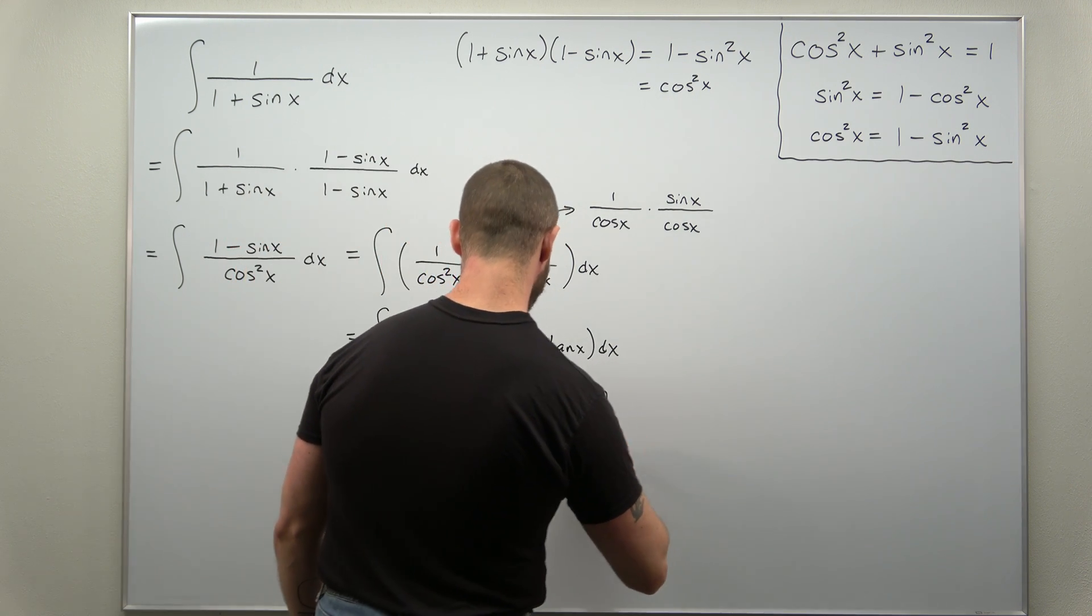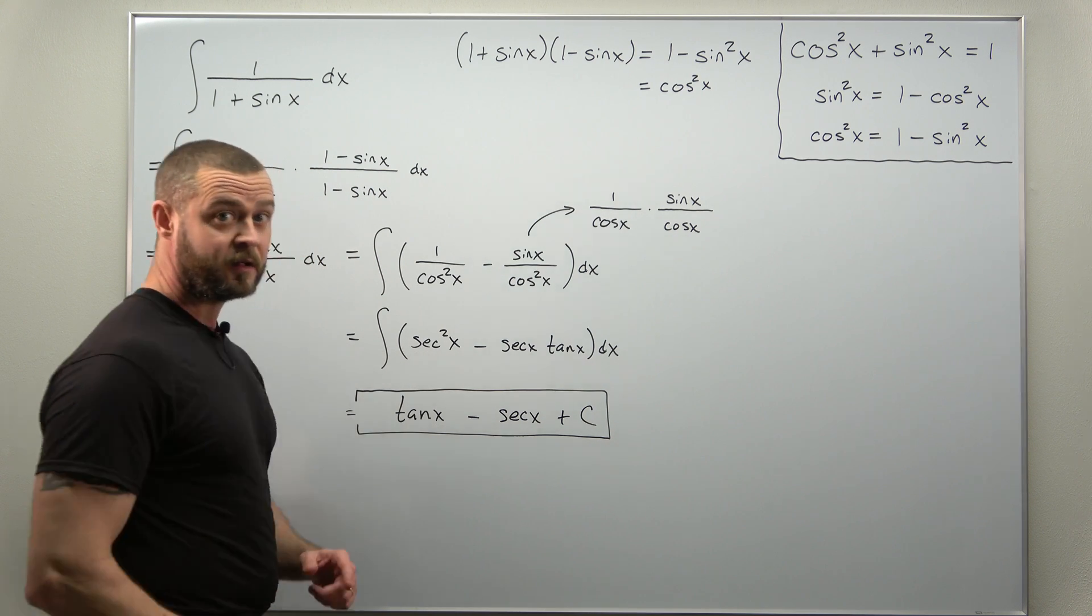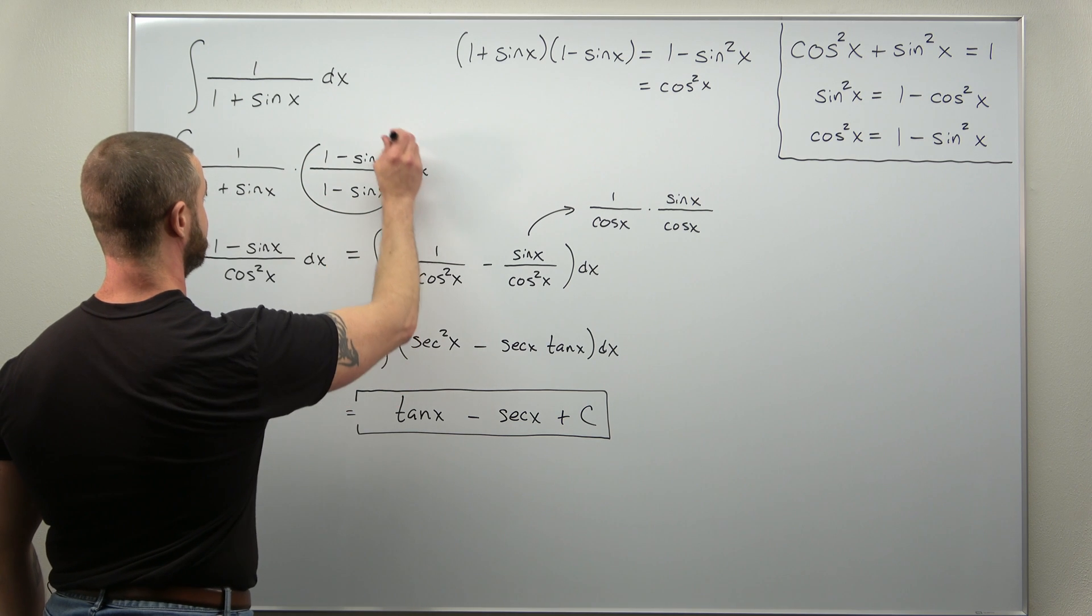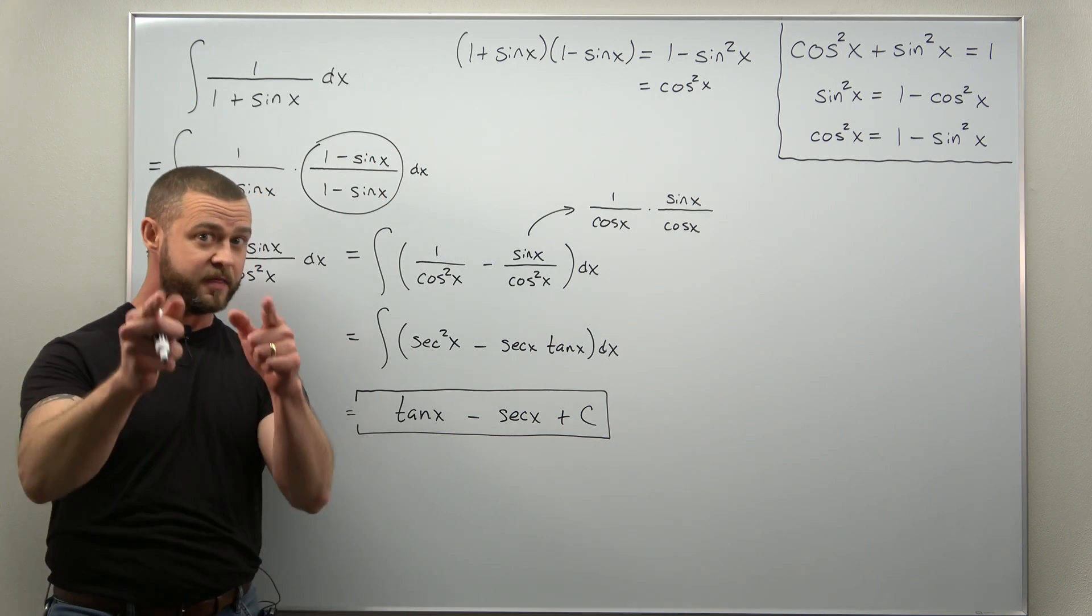And we get our antiderivative here by using our algebraic trick, multiplying by one, which was right here in the beginning. And there we go.